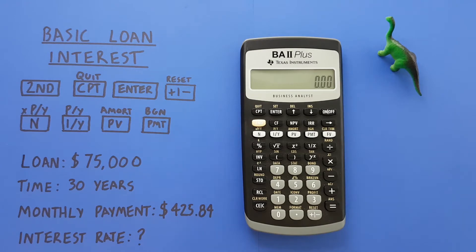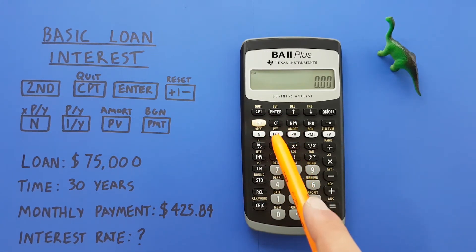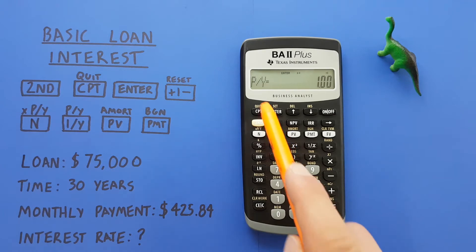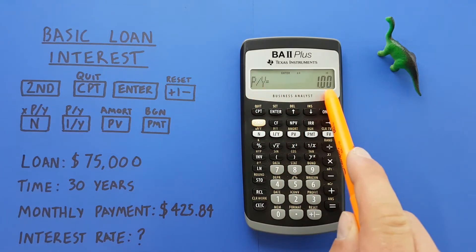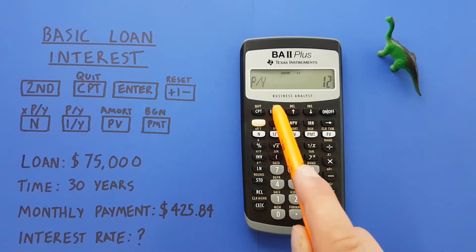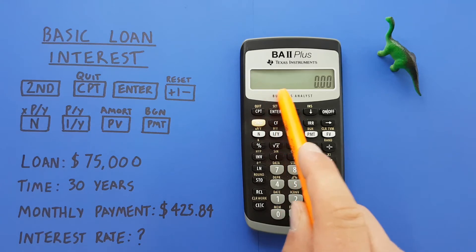To solve this, first we want to enter our payments per year. We press the second function key and then this 1 over y key with the second function of P over Y or payments per year. That brings us to this menu, and since we have monthly payments we enter 12, press enter to confirm, and then quit out of this menu with the second function compute key.